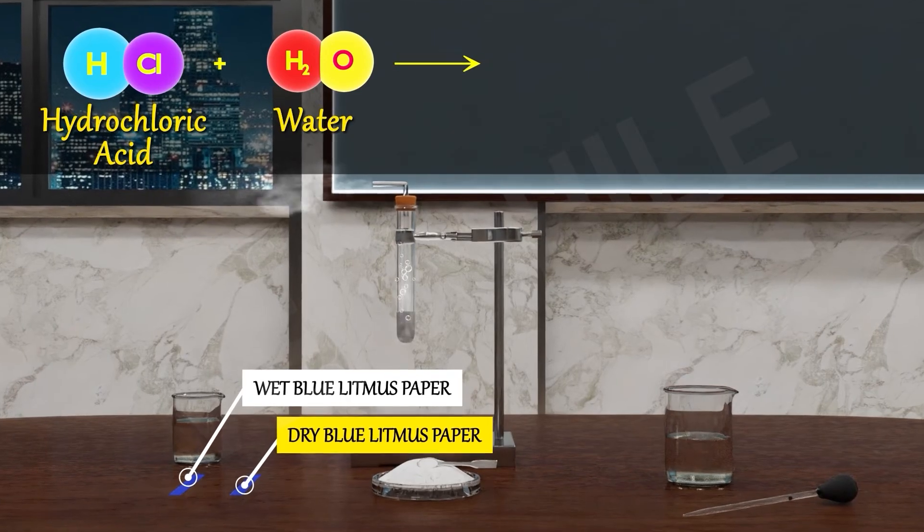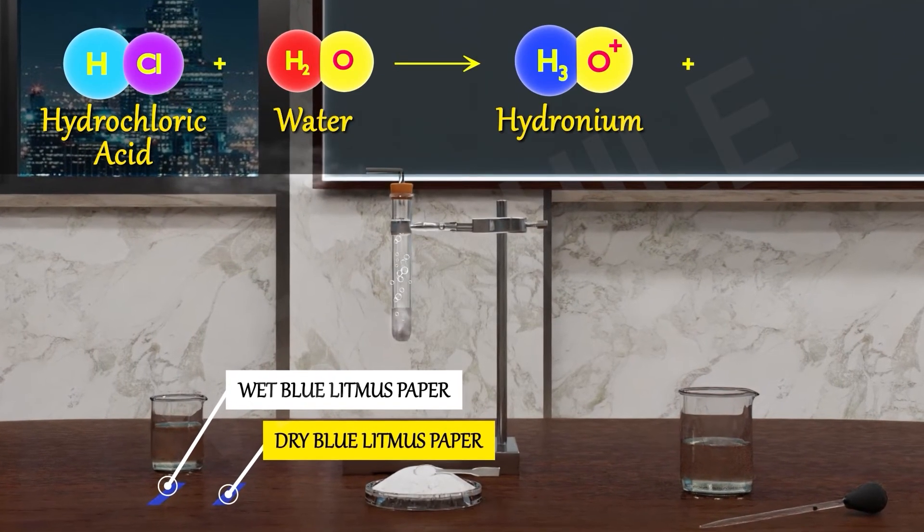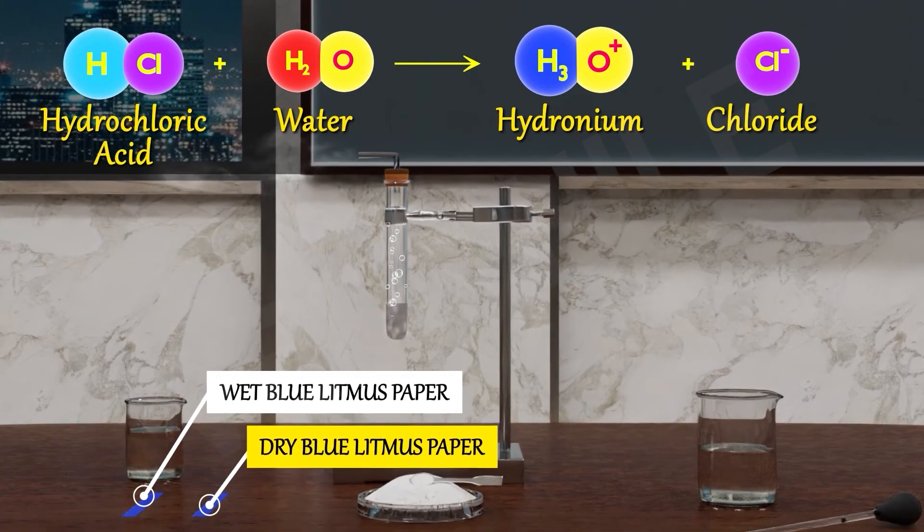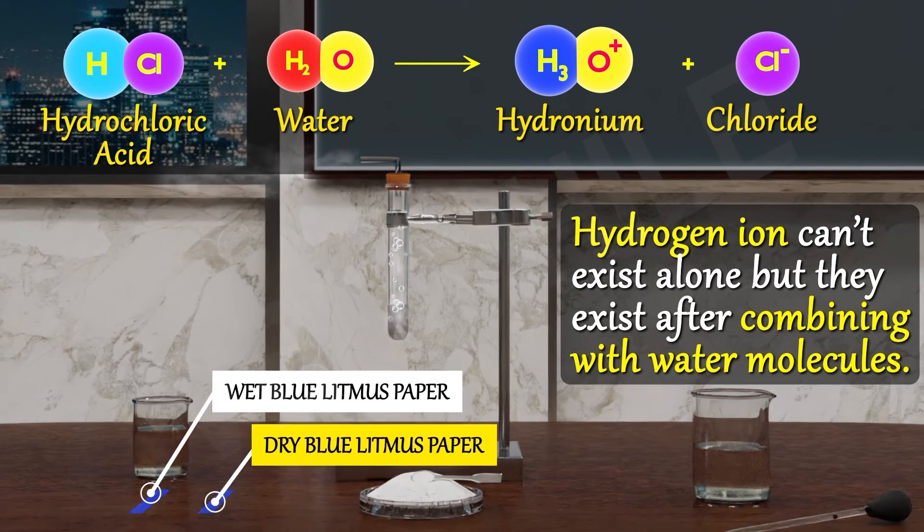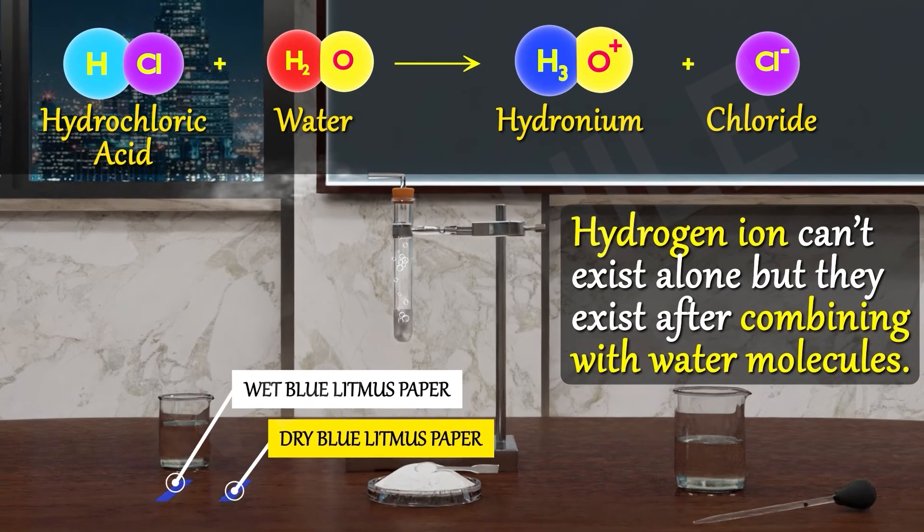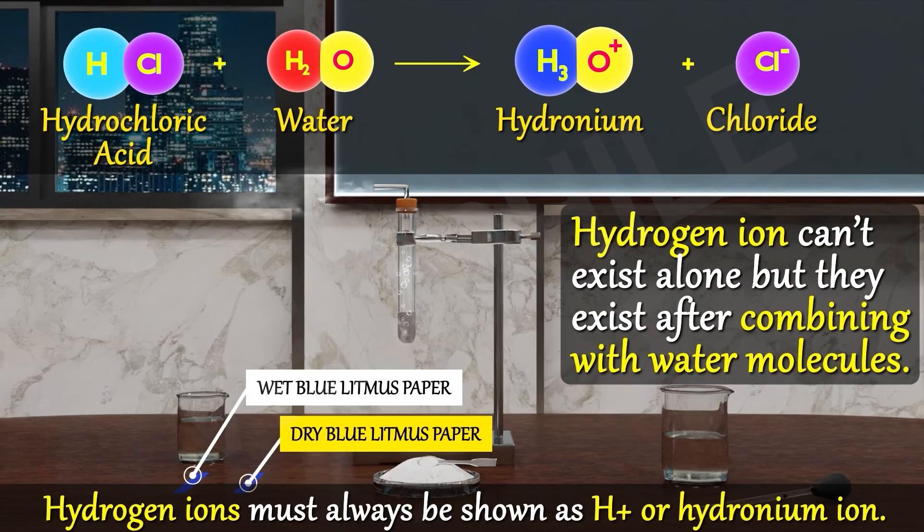This produces hydronium ions, H3O plus, and chloride ions, Cl minus. Hydrogen ions cannot exist alone but they exist after combining with water molecules. Thus hydrogen ions must always be shown as H plus or hydronium ions.